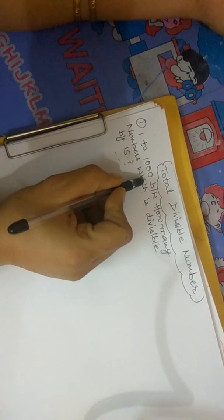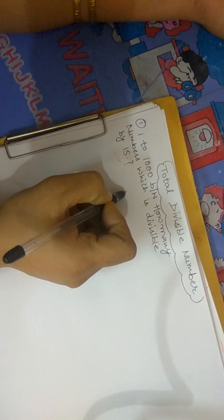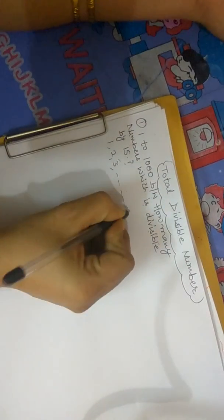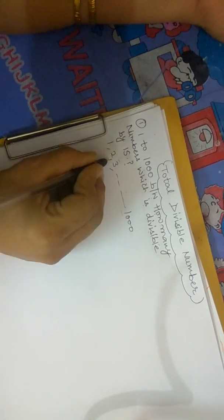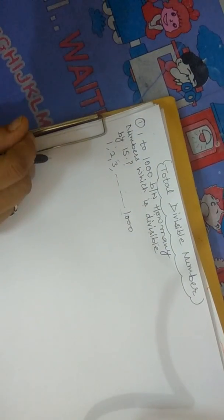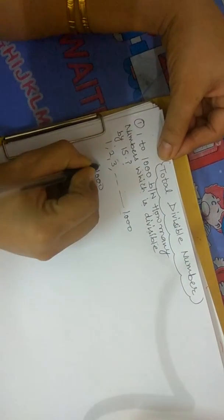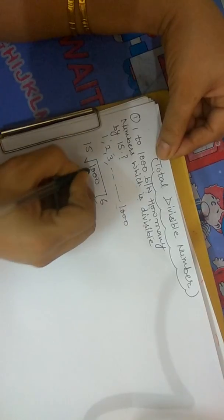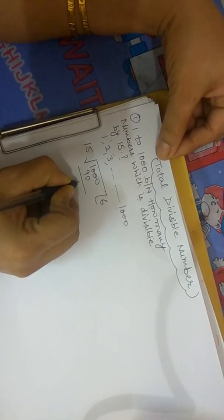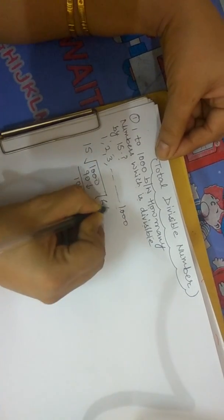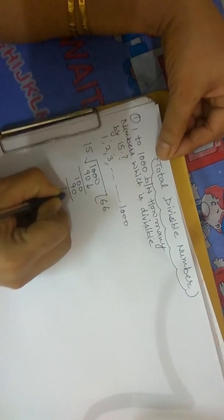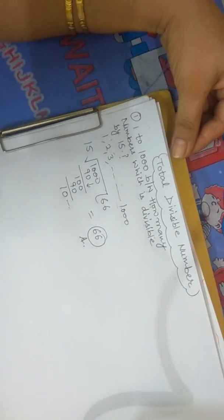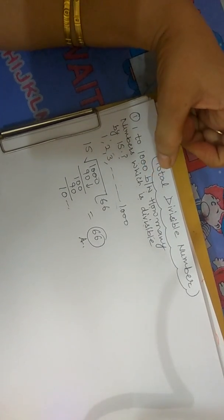From 1 to 1000, how many numbers are divisible by 15? What we can do is divide 1000 by 15. That gives us 66 with a remainder, so our answer is 66. There are 66 numbers between 1 to 1000 that are divisible by 15.